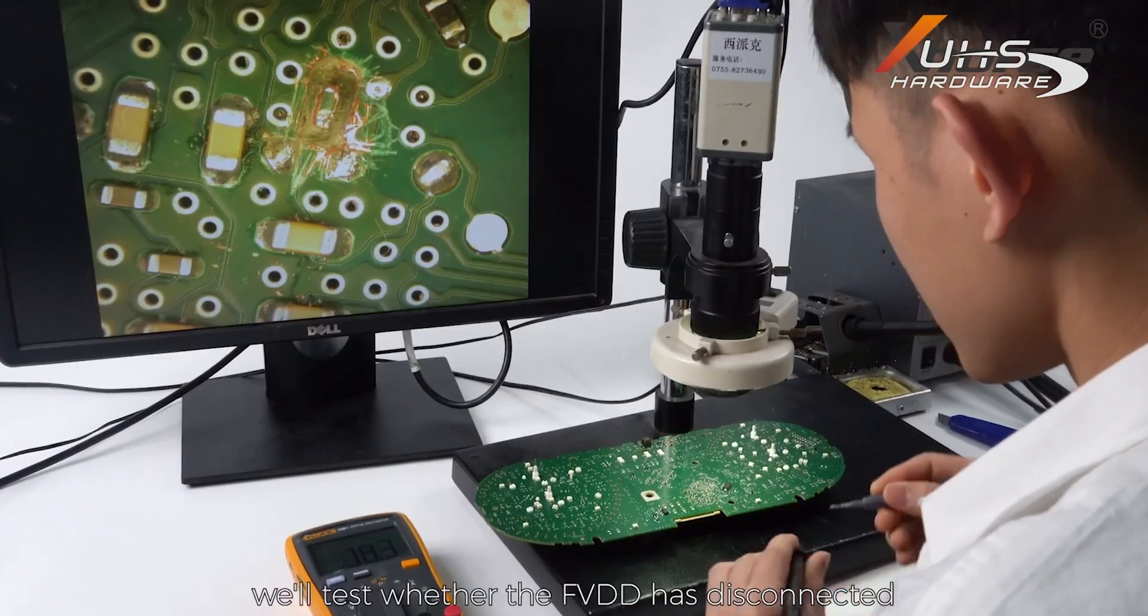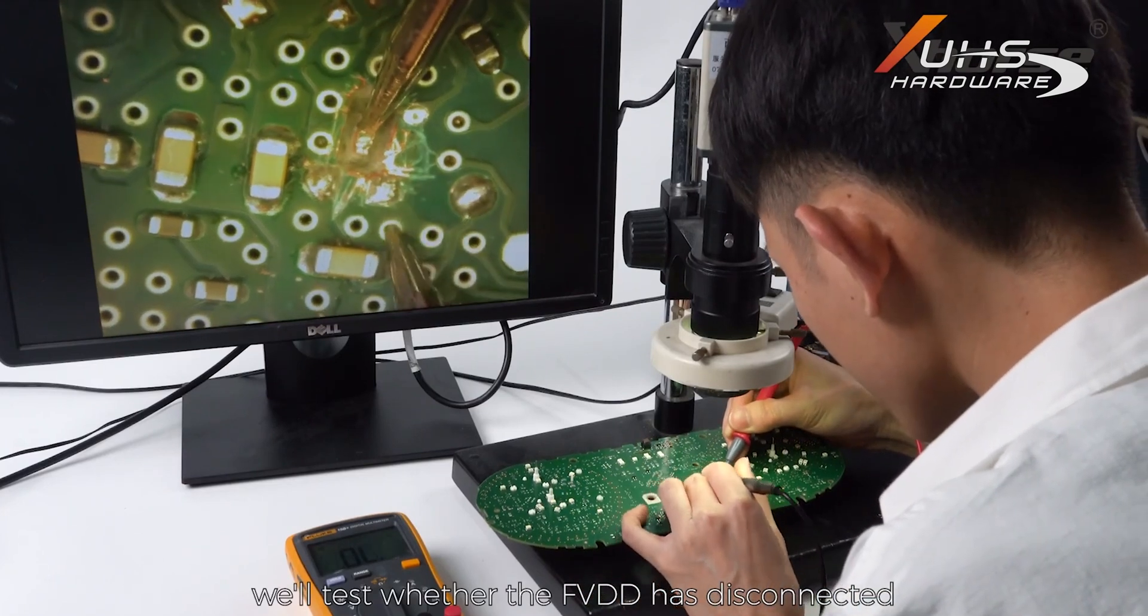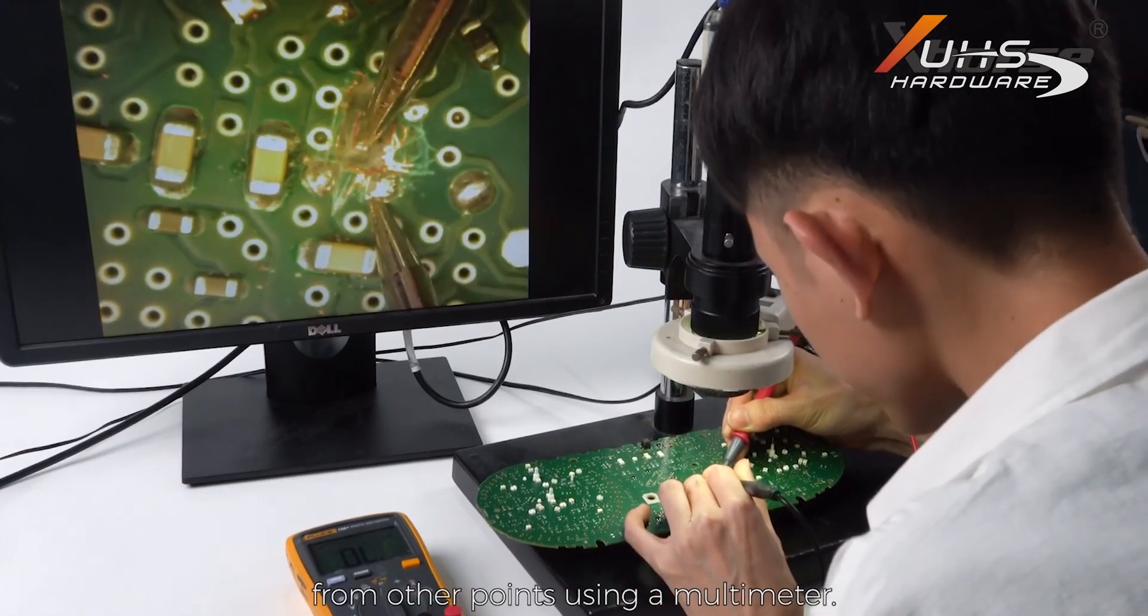After the cutting, we'll test whether the FEDD has disconnected from other points using a multimeter.